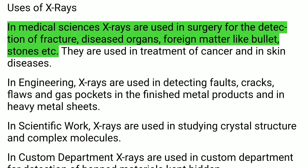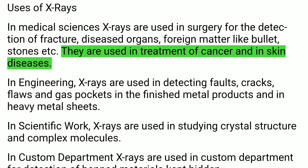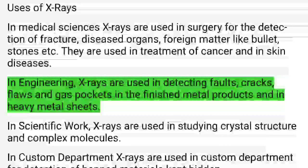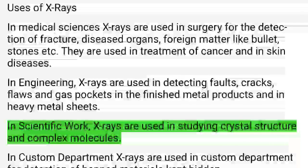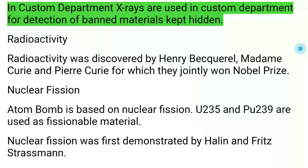Uses of X-rays: In medical sciences, X-rays are used in surgery for detection of fractures, diseased organs, and foreign matter like bullets and stones. They are used in treatment of cancer and skin diseases. In engineering, X-rays detect faults, cracks, flaws, and gas pockets in metal products. In scientific work, they study crystal structure and complex molecules. In customs, they detect banned materials kept hidden.